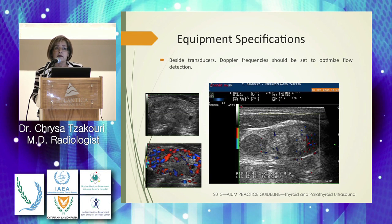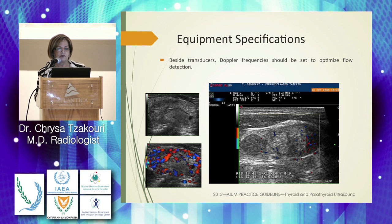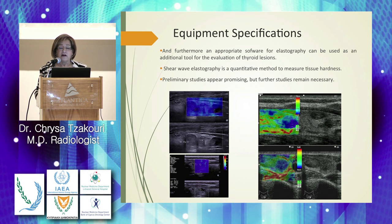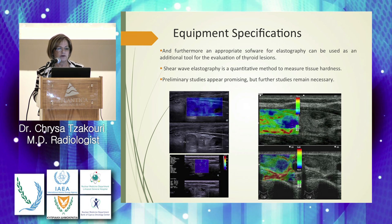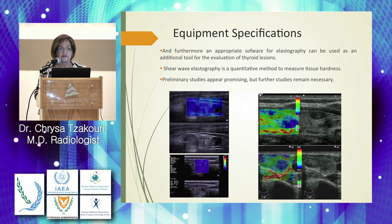Beyond transducers, Doppler frequencies should be set to optimize flow detection. Although not yet in the 2013 guidelines but promising, appropriate elastography software can be used as an additional tool for evaluation of thyroid lesions. Shear wave elastography is a quantitative method to measure tissue hardness, better than conventional elastography, but preliminary studies appear promising and further studies remain necessary.